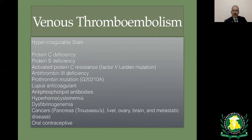The most important cancers associated with hypercoagulability are lung cancer, pancreatic cancer, ovarian cancer, and brain cancer. Oral contraceptives — especially those containing estrogen — also increase coagulable state, particularly in the first six months of therapy.